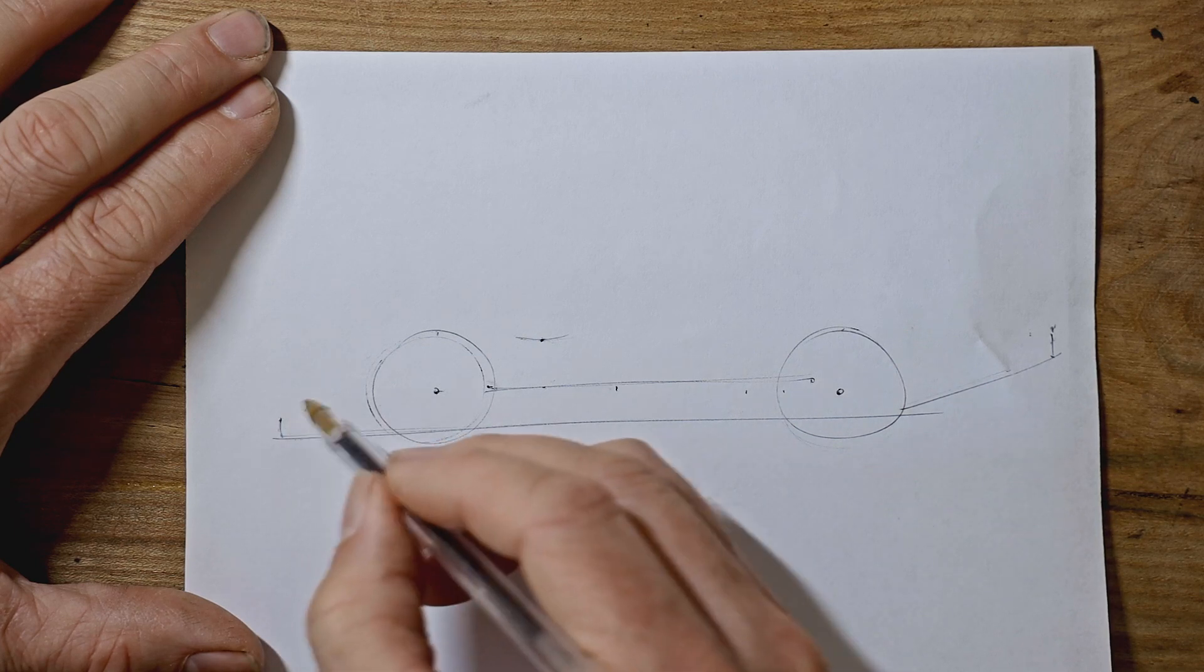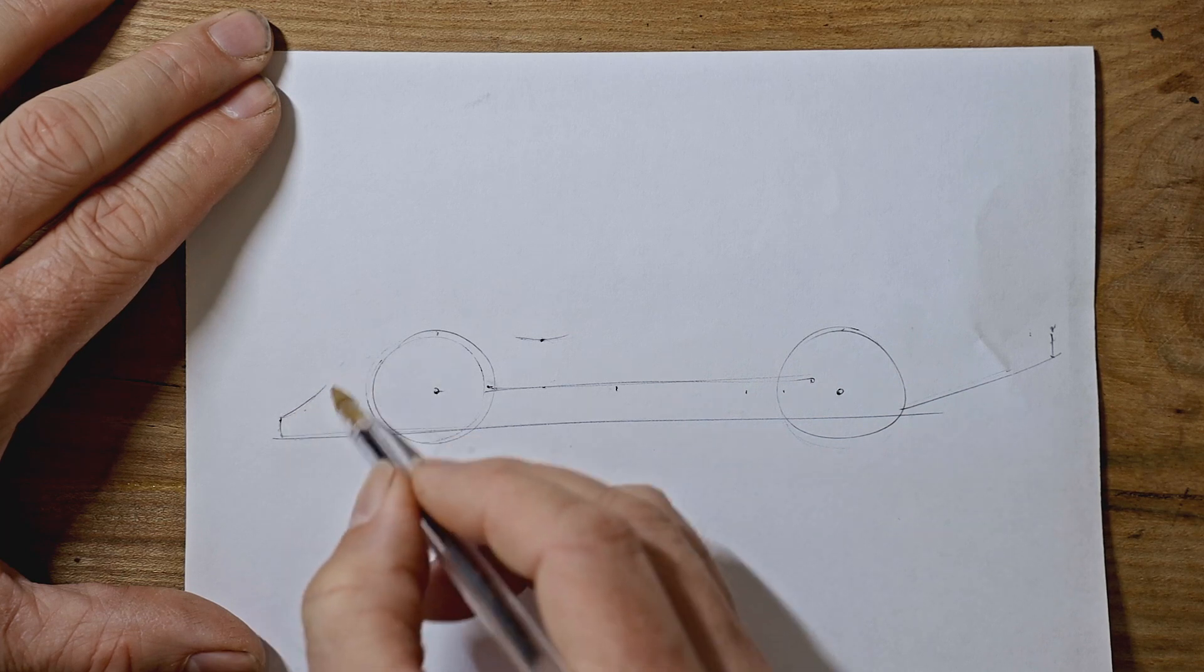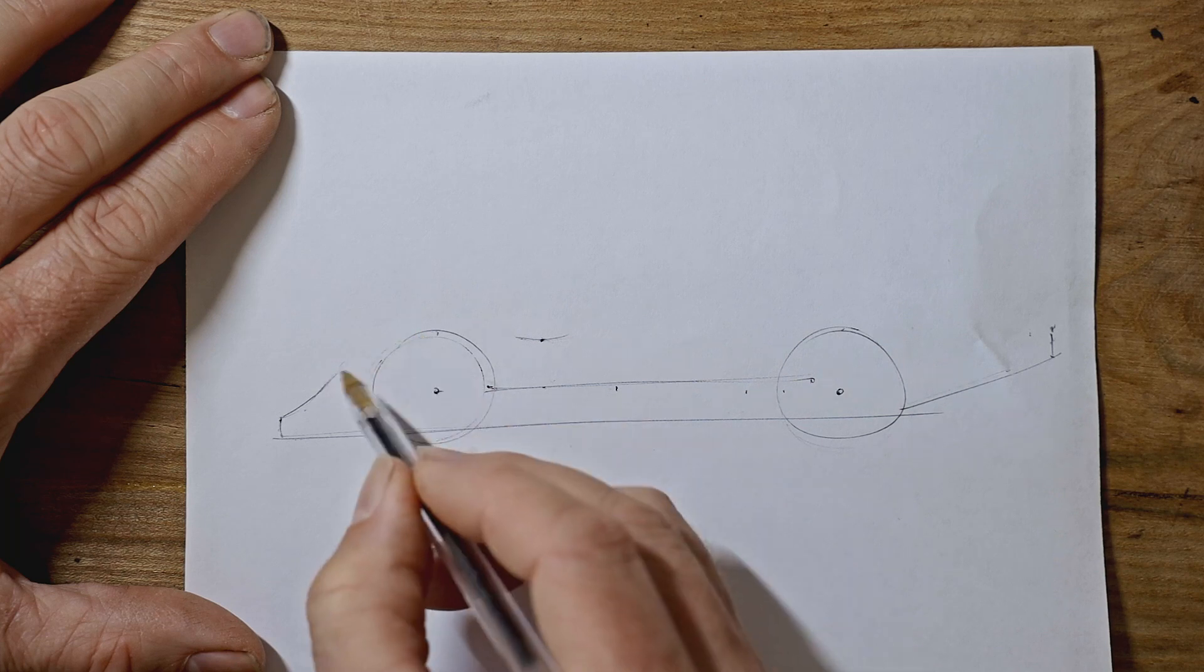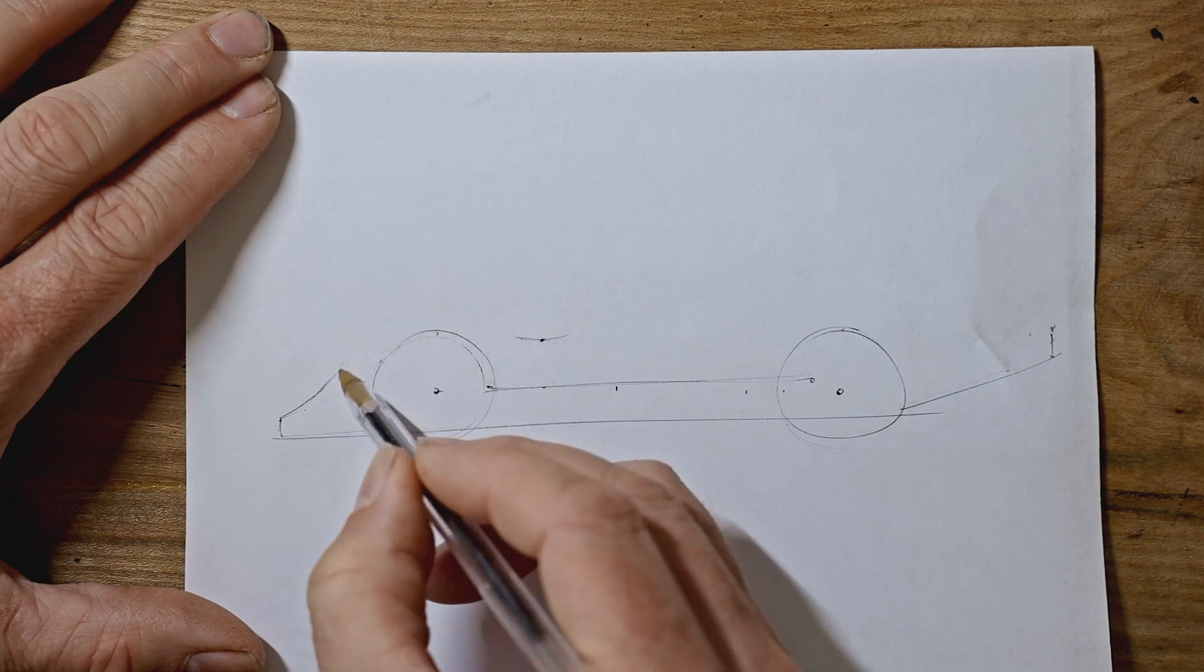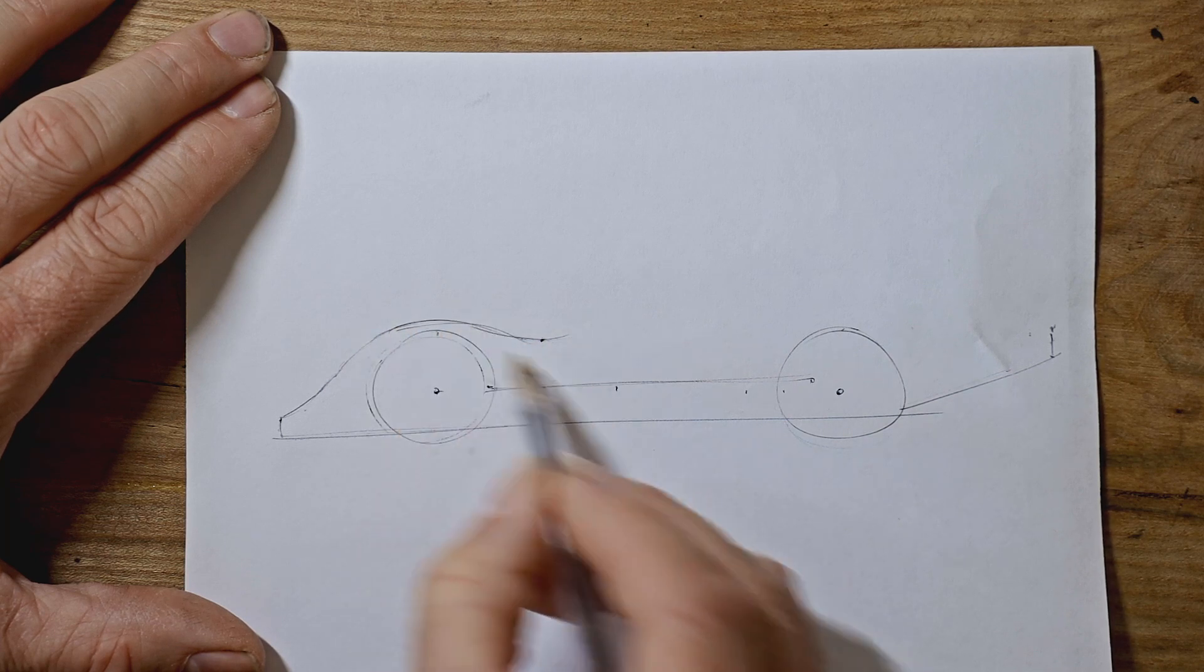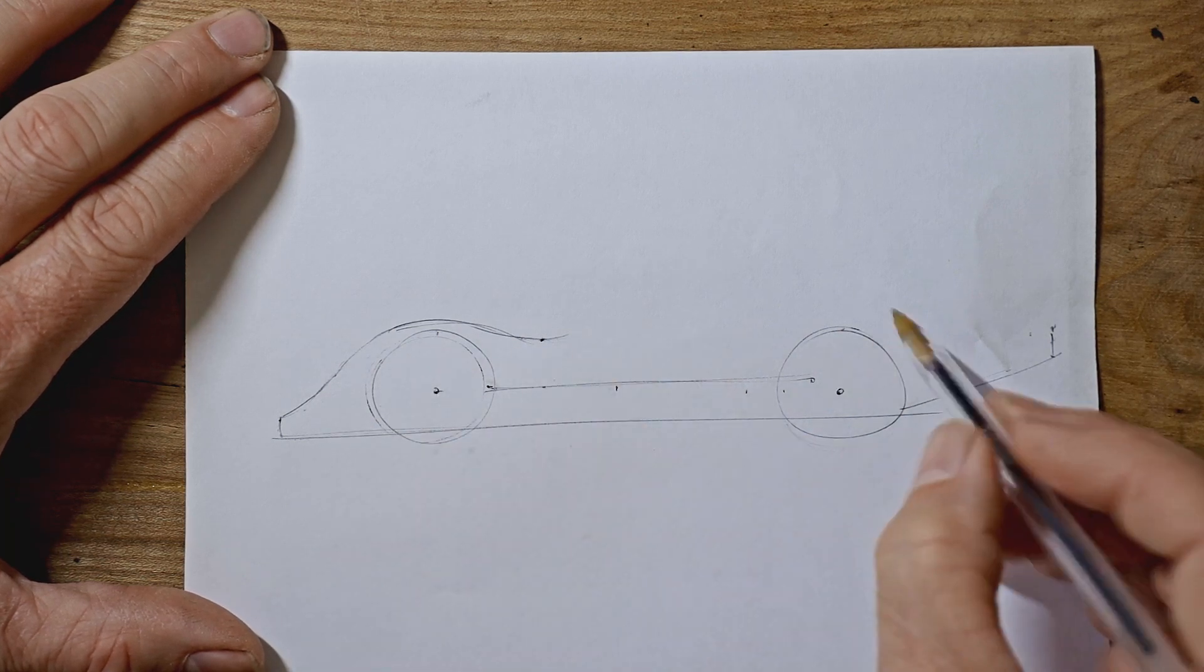So we need to do a small dip downwards to start off. And now we're into the upwards curve that goes over the front wheel and then comes back down to meet this. Very tricky to do it all in one go. It's easier to break it into a few chunks. Draw lightly.